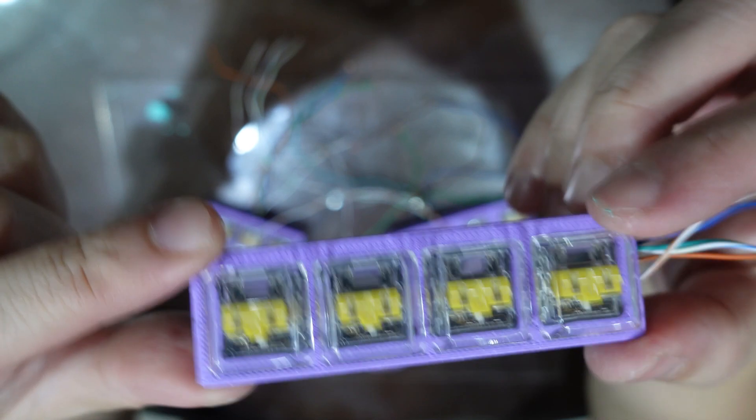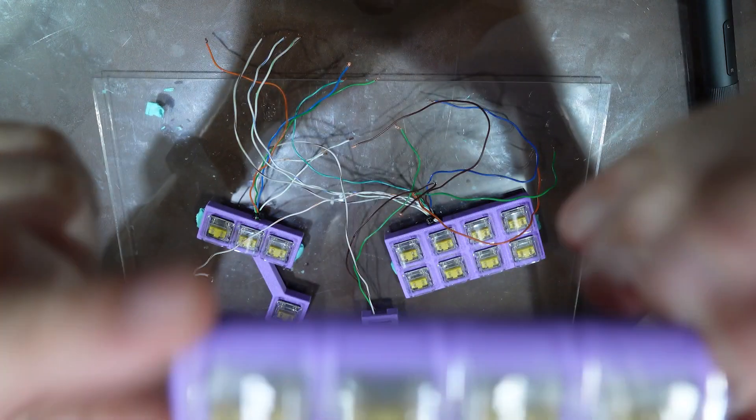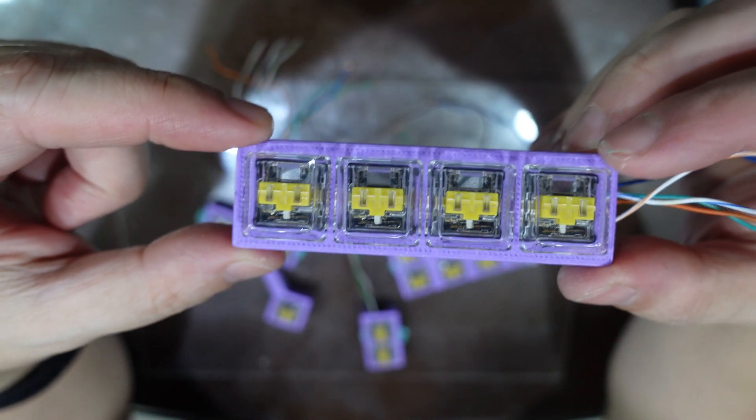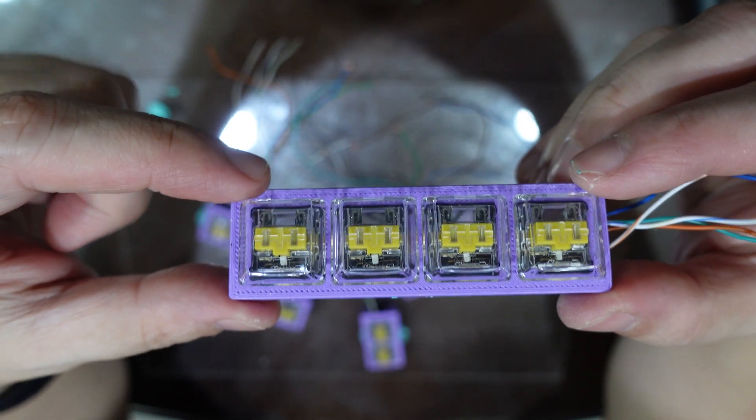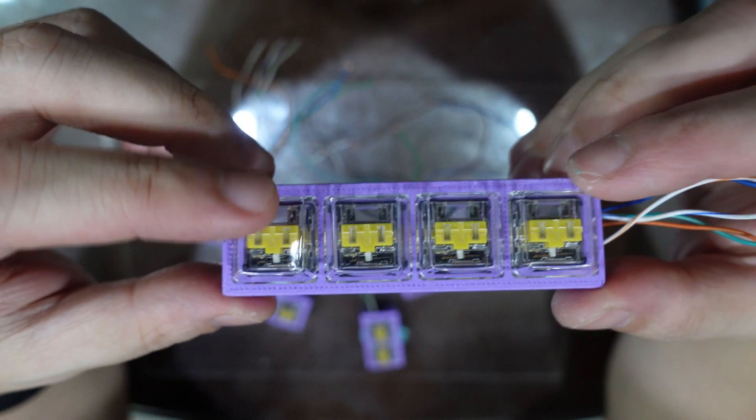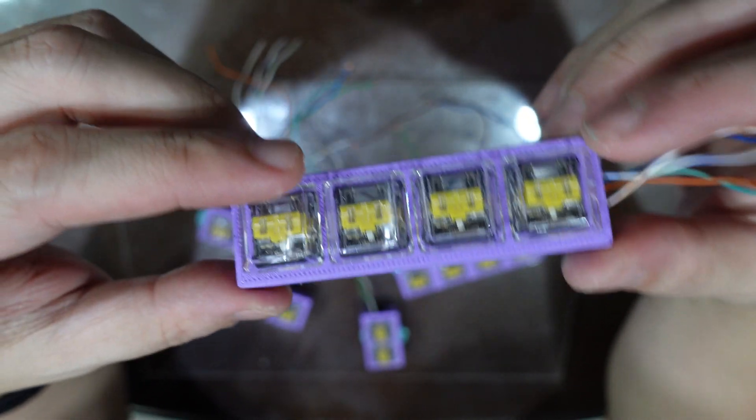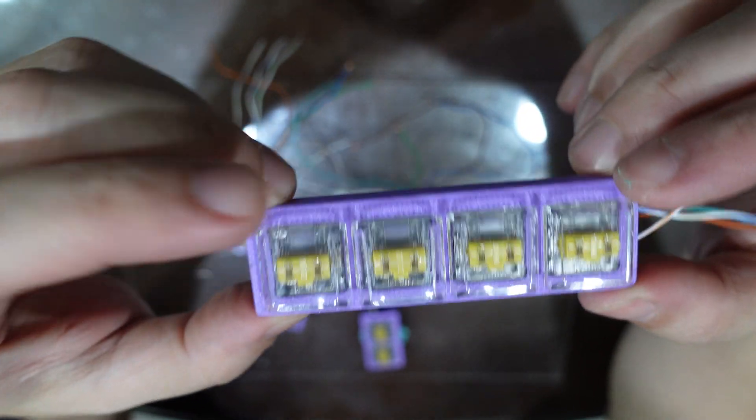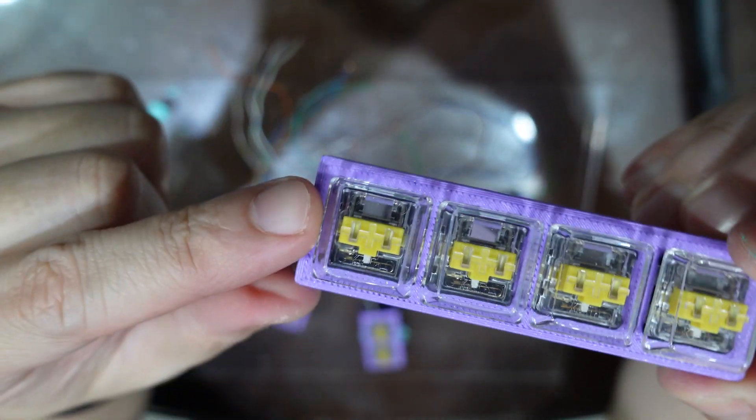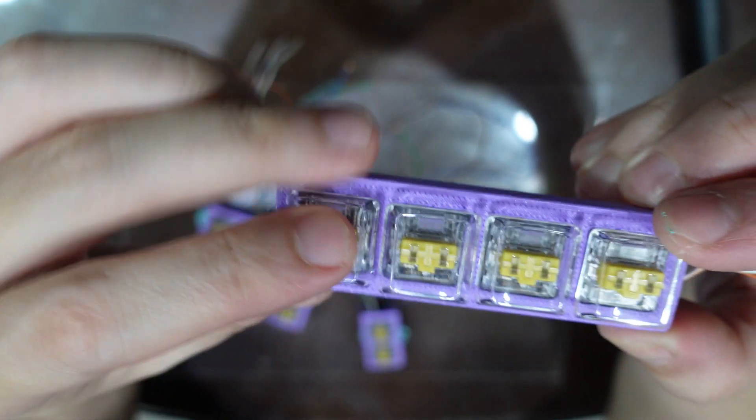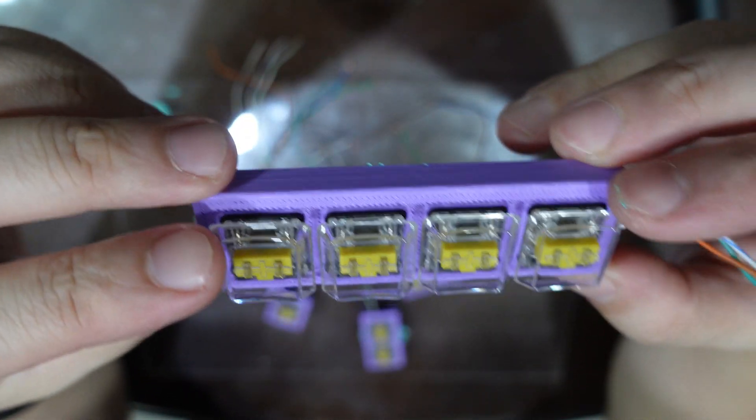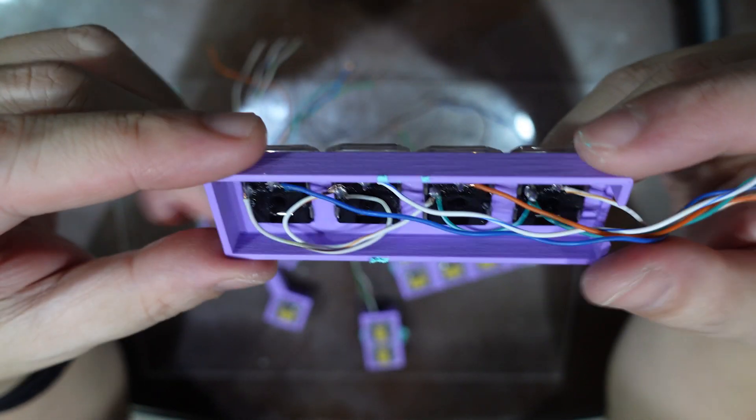This one is meant to fit Kailh low profile Choc keys. I'm using the linear version and I got some transparent keycaps for it. Everything was just hand soldered myself, directly by soldering the wires, just push the keys into the frame and then I'm just soldering everything directly.